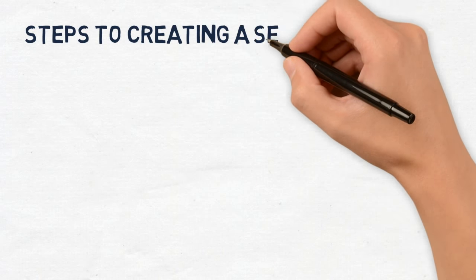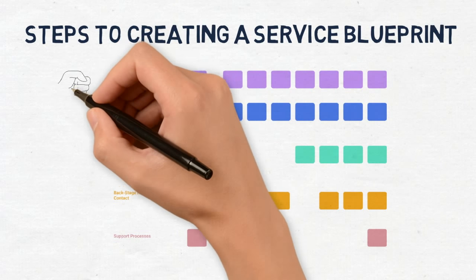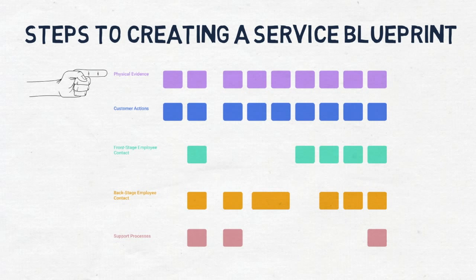Now we start building the service blueprint. You can start by defining the physical evidence in the process. What are the systems they are using? What are the digital and physical tools they are using? How do people interact with the brand? On social media or through blog posts?